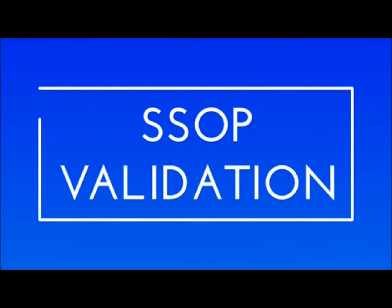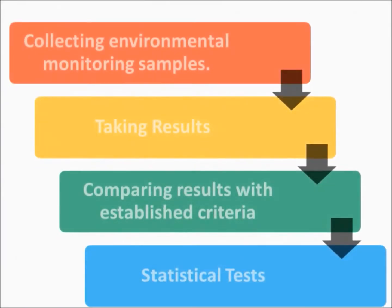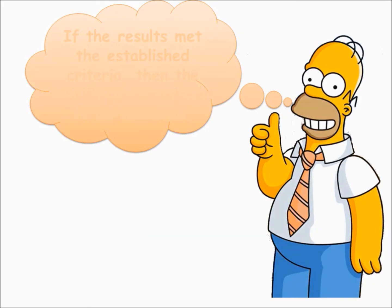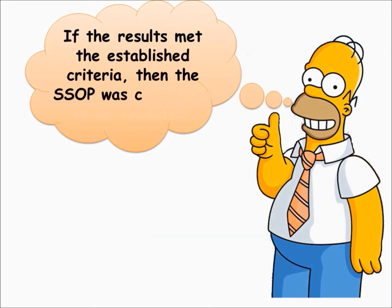SSOP Validation. The Codex guidelines describe a validation scenario for a Sanitation Standard Operating Procedure (SSOP). In this scenario, environmental monitoring samples were taken daily on food contact surfaces over a period of three to four weeks. The results of the environmental samples were then compared to established microbiological criteria. Statistical tests were used to determine the efficacy of the SSOPs. If the results met the established criteria, then the SSOP was considered to be validated.